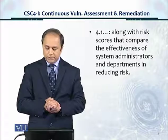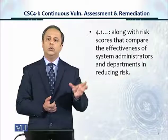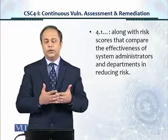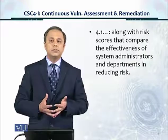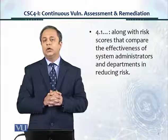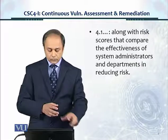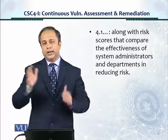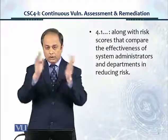Along with risk scores that compare the effectiveness of system administrators and departments in reducing risk. The tool provides a risk rating — critical, high, medium, or low. You can either share that rating or develop your own scoring based on the percentage of systems having a particular tier of vulnerability. For example, if 20% of 100 network devices have a critical vulnerability, you can create a scoring system to compare departments and determine how insecure each unit is overall.